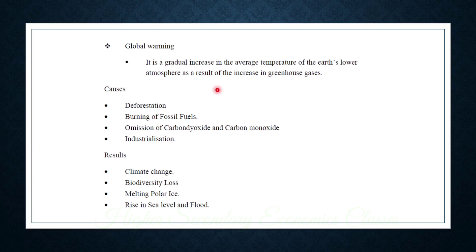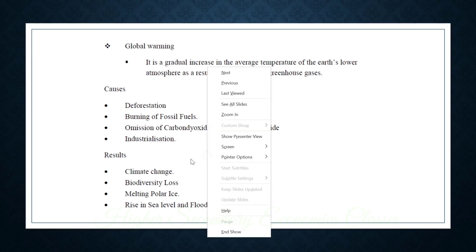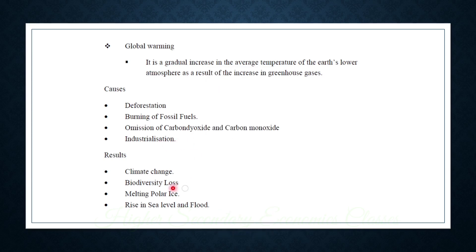What is global warming? Causes include deforestation, burning of fossil fuels, emission of carbon dioxide and carbon monoxide, and industrialization. Effects include climate change, loss of biodiversity, melting polar ice, rise in sea level, and flooding.